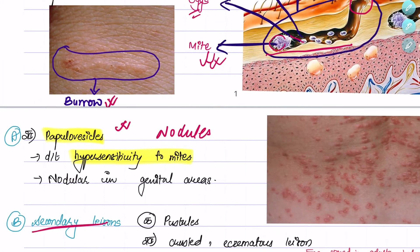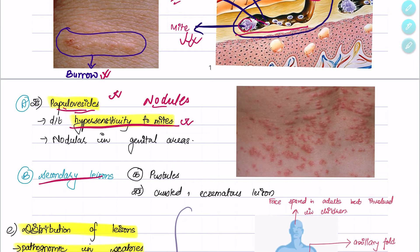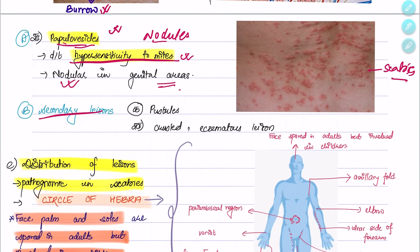Along with burrows, there can be papules, vesicles, and nodules due to hypersensitivity to the mites. There can also be nodules in the genital areas. The secondary lesions are pustules and crusted eczematous lesions, which are seen due to secondary infection.